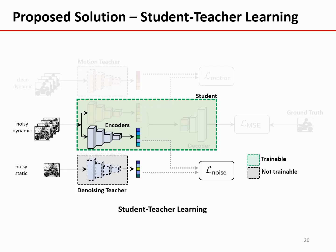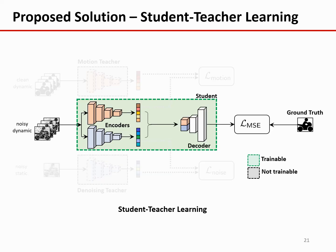Likewise, the second loss is a denoising similarity. We also want the student's denoising encoder to behave similarly as the denoising teacher's encoder. Finally, we have a decoder to translate the motion and denoising features back to an image. The third loss function we use is the standard mean square error loss to measure the difference between the reconstruction and the ground truth. The overall loss function is the weighted combination of the three losses, where the weights are tunable parameters.